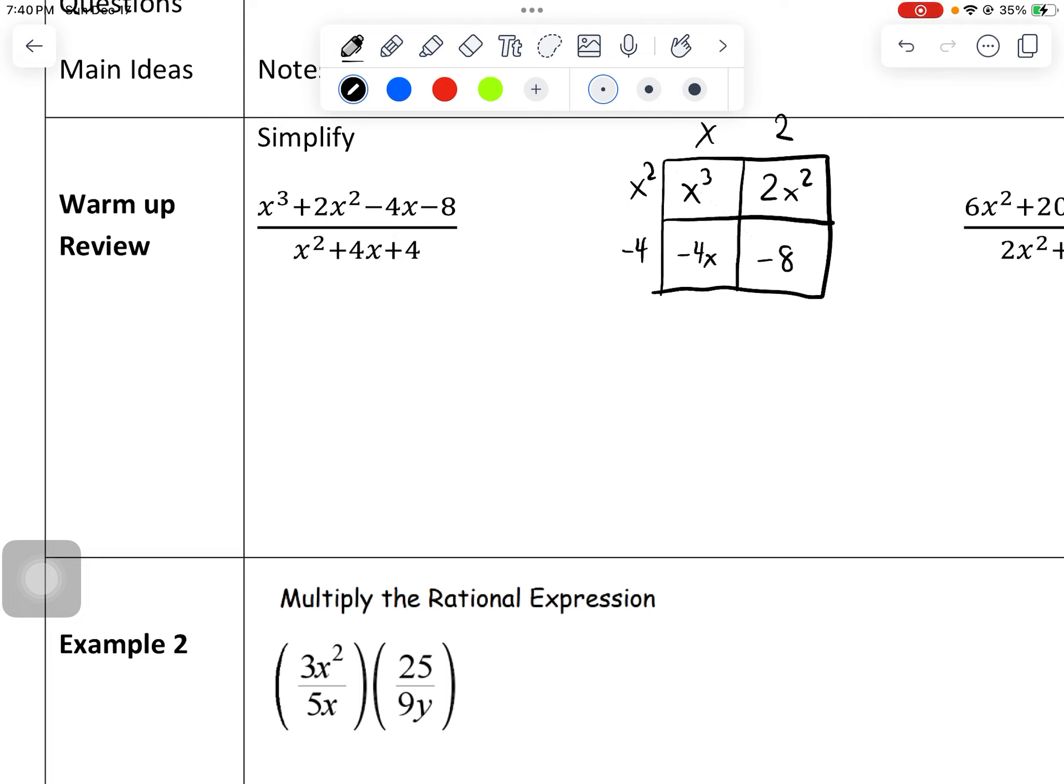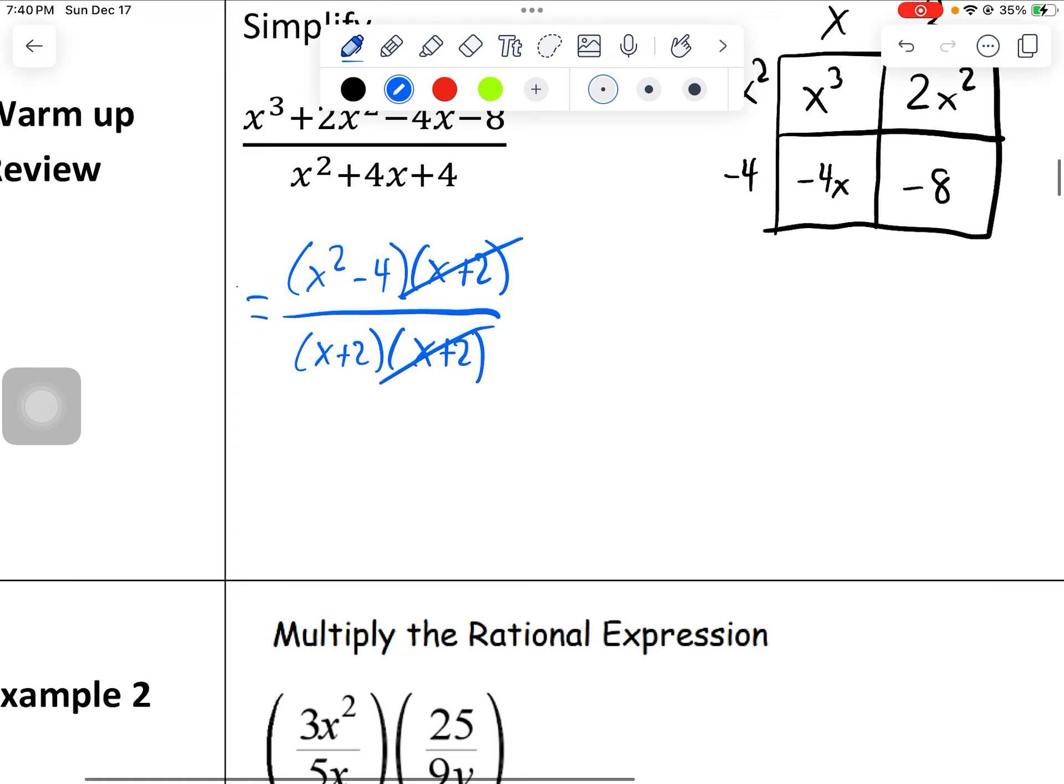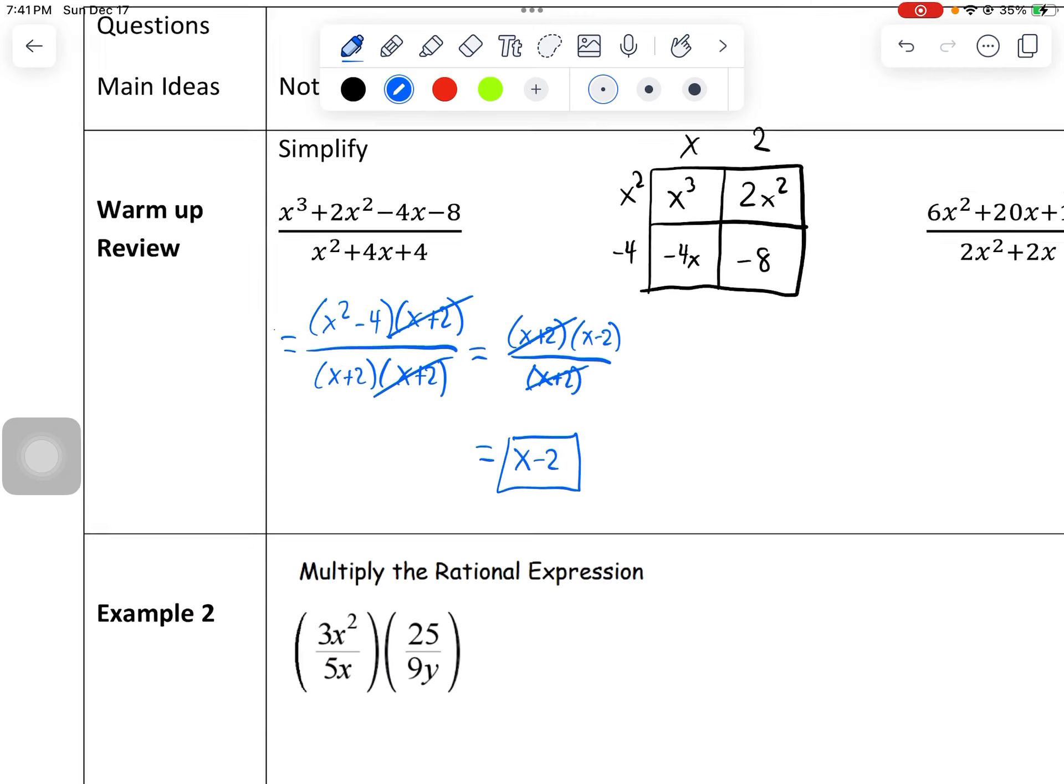I'm going to change my pen color. So this is the same as x squared minus 4 over x plus 2 on the top. Now this bottom one will also factor. So we can take out x plus 2 and x plus 2, factors of 4 that add to make 2. I can cross this out because I have one of each on the top and the bottom. But remember that x squared minus 4 will simplify further. So that's x plus 2 times x minus 2.